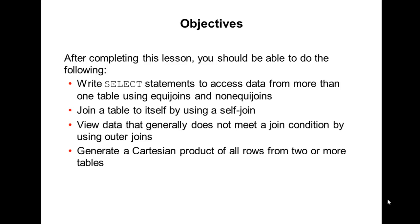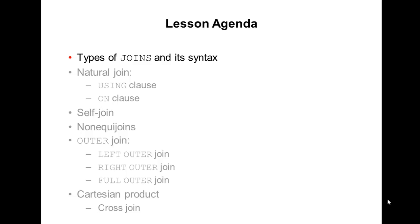After completion of this lesson you should be able to write a SELECT statement to access data from more than one table using equi-joins or non-equi-joins, how to join a table to itself, how to view data that does not meet a join condition using outer joins, and how to generate a Cartesian product of all rows from two tables.